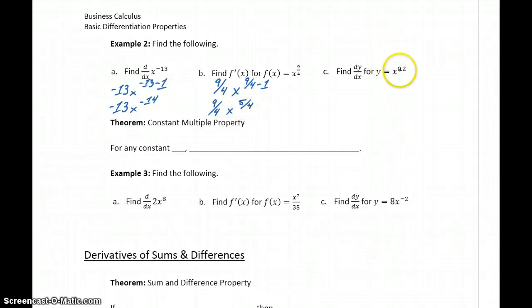And then similarly, for x to the 0.2, so here we have a case where we have an integer as the exponent, a fraction, and now a decimal as the exponent. But in each case, the same rule continues to apply. So 0.2 x to the 0.2 minus 1 becomes 0.2 x to the negative 0.8. So whenever we're dealing with a power function, just x raised to any real number, including fractions, decimals, positive, negative numbers, that same pattern applies.